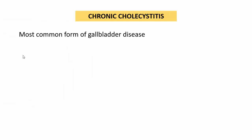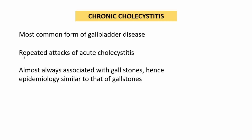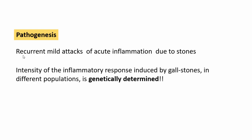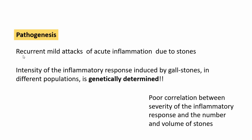Chronic cholecystitis is the most common form of gallbladder disease. It occurs due to repeated attacks of mild acute cholecystitis and is almost always associated with gallstones, so its epidemiology and risk factors are similar to those of gallstones. The intensity of the inflammatory response induced by gallstones varies across populations and is genetically determined. There is a poor correlation between the severity of inflammation and the number or volume of stones — some populations respond minimally to large numbers of stones while others exhibit florid inflammation and fibrosis.